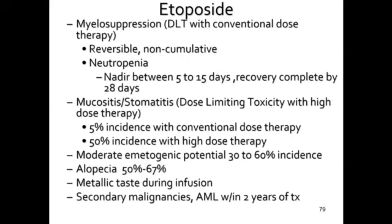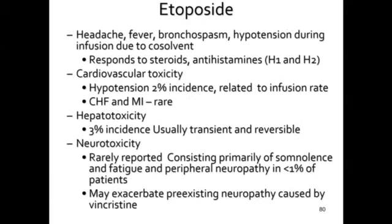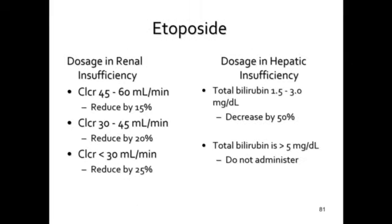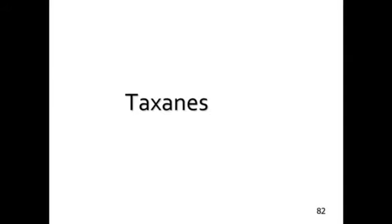Patients receiving etoposide for lung cancer are much less likely to see side effects than those receiving it as part of a conditioning regimen for bone marrow transplant. Secondary malignancies, headache, fever, bronchospasm, low cardiovascular toxicity, and neurotoxicity is pretty low with etoposide. It does require dose reduction for renal insufficiency. Hepatic insufficiency also requires dose reductions, though that is a somewhat softer recommendation.